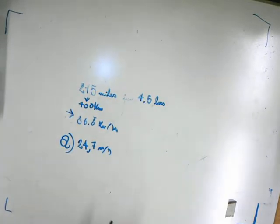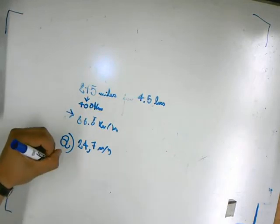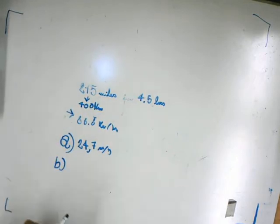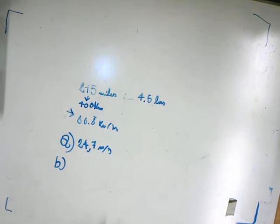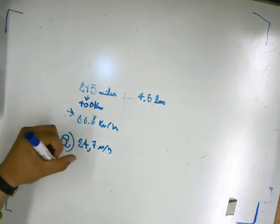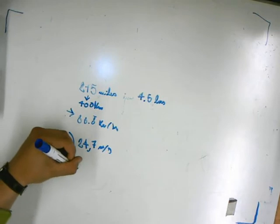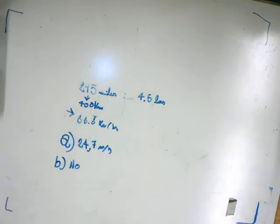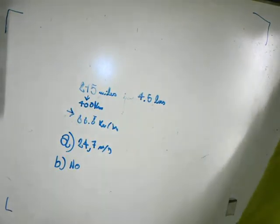And question B is, do you know what the speed is of the person when he passes through Baltimore? But we can't answer this question because we only know the average speed. We don't know the speed at one moment - it's a theoretical thing.